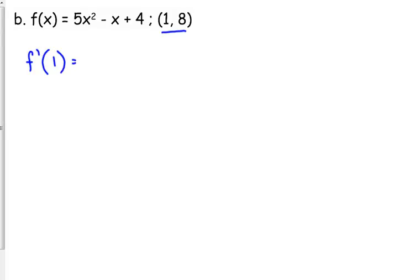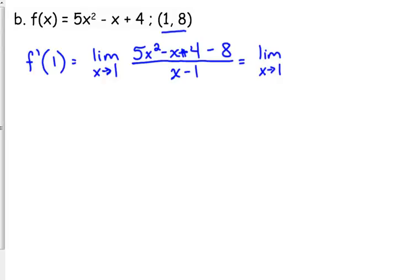Yes, I'm going to keep saying those things over and over and over again. Is equal to the limit as x approaches 1 of f of x minus f of a. In this case, that is 8. All over x minus a, which is 1. So, we haven't done anything with the limit yet. So, we write it down again. The limit as x approaches 1.